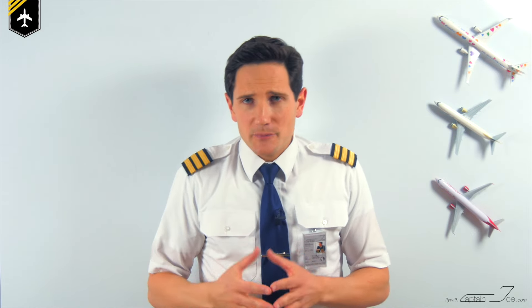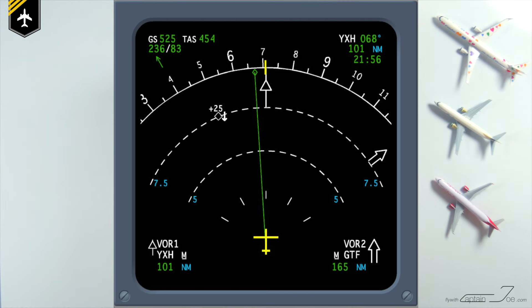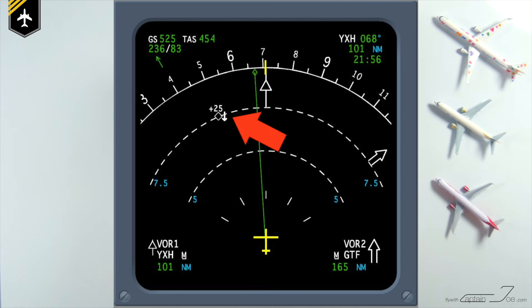Once another aircraft gets into your TCAS airspace, a little diamond will pop up on the navigation display showing you where the aircraft is and its vertical separation to your aircraft. In this example, the airplane is at 2,000 feet above you — above indicated by the little plus symbol, minus would be below — but in this example there is no imminent threat. The little arrow pointing down or upward indicates that the aircraft is either in a climb or descent relative to your aircraft.